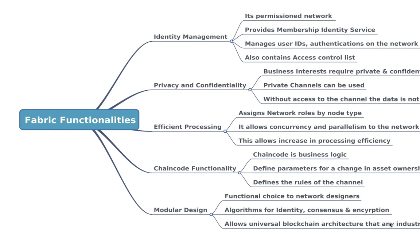These are the major functionalities of Hyperledger Fabric, which allow it to function as an ideal permissioned network — one of its best advantages. Thank you for staying with me. We will be talking more about Hyperledger Fabric in the next series of videos. Till then, sayonara.